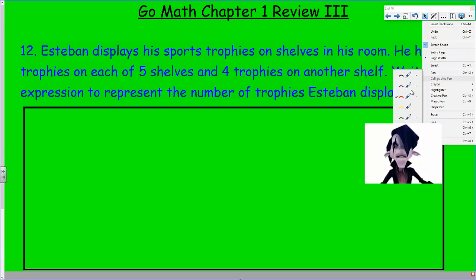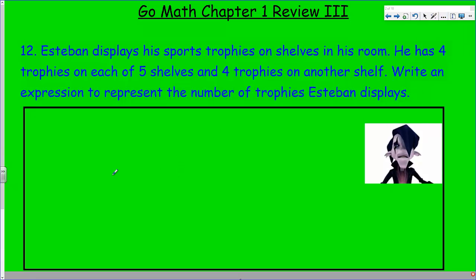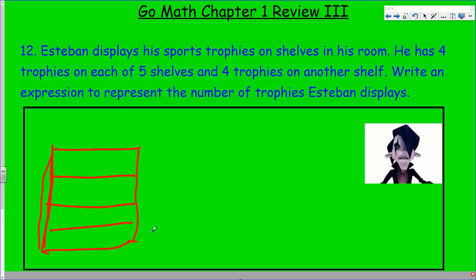The difficulty of the problem always gets me to start drawing a picture. In this case, let's just do that. We have shelves in his room. He has four trophies on each of five shelves. The easiest thing before we start to put it as expression, let's just imagine we have five shelves: one, two, three, four, five. This is the top shelf, kind of think of it like a bookshelf.